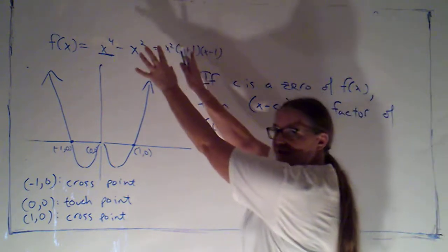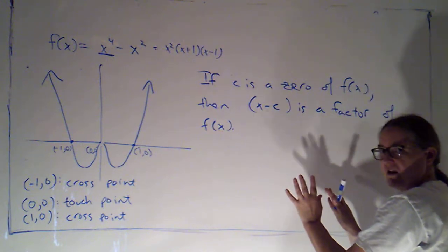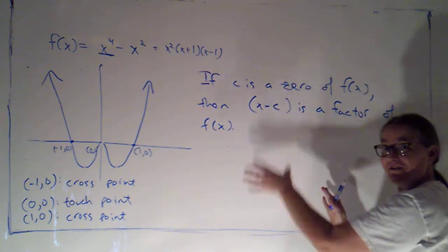We're used to saying, if I have a factor, I can get a zero. Now we say, it works the other way around, too. If you have a zero, you can get a factor.